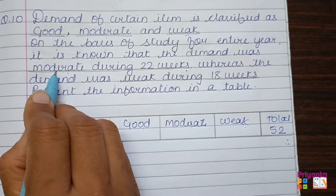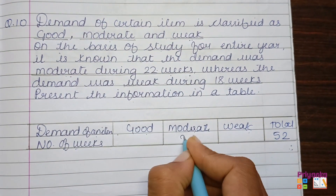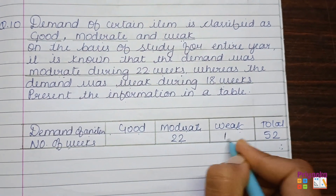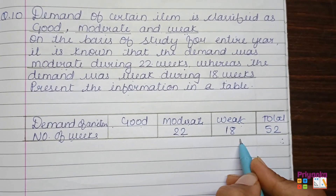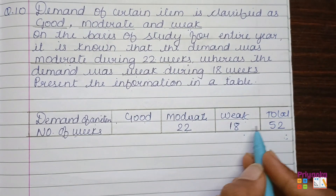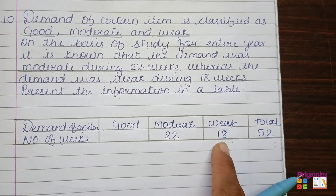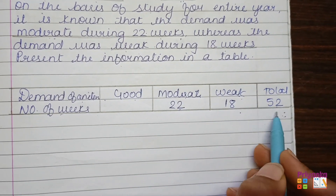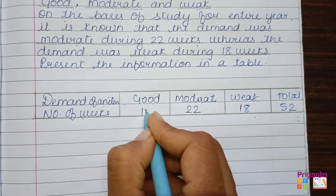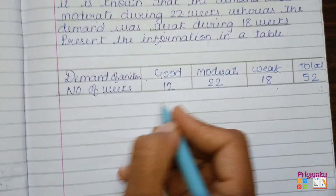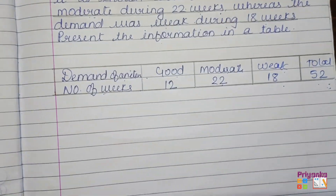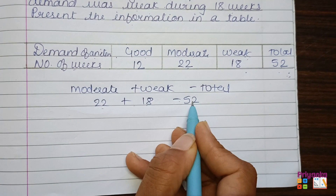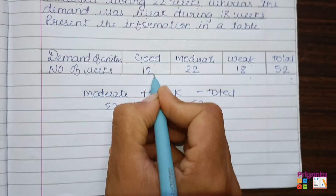First, find the moderate weeks: 22. Weak was for 18 weeks. Now out of the total we already have these two values. Just add them: 22 plus 18 will be 40, and 52 minus 40 will be 12. So 22 plus 18 minus 52 gives 12 — that is the number of good weeks.